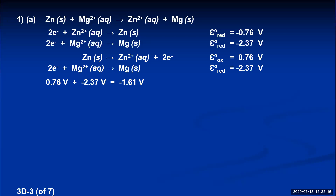This tells you data just like free energy changes do, only with an opposite sign relationship. If the voltage is positive, the reaction as written is spontaneous. If the voltage is negative, the reaction as written is non-spontaneous. This one is non-spontaneous.